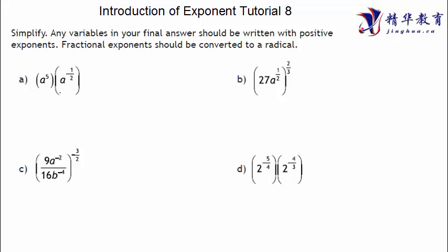Let's look at the first question: a to the power of 5 times a to the power of negative one half. Since same base multiply means we add the exponents, it'll be a to the 5 plus negative one half.